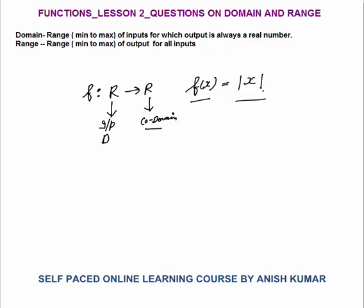Here the input will be x and the output will be f(x), which you can also call y. So y = f(x) is the output. Now can you tell the domain and range of this function?